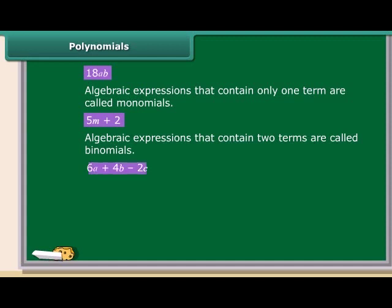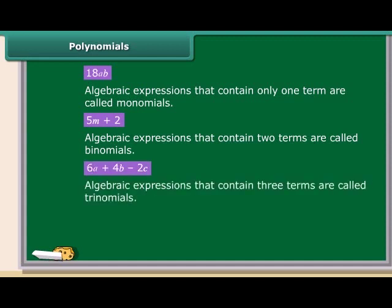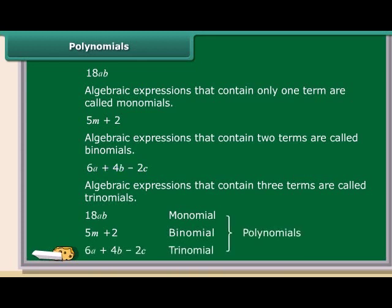The expression 6A plus 4B minus 2C is not a binomial because it has three terms, right? So this type of algebraic expression is called trinomial. Remember, all algebraic expressions that have one or more than one terms are called polynomials. Therefore, mononomials, binomials and trinomials are all polynomials.